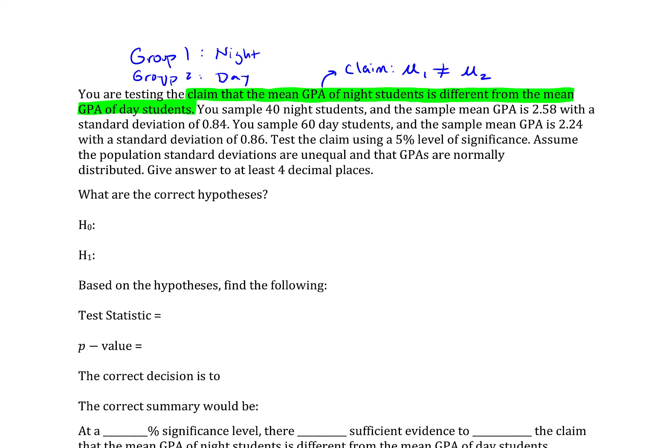So of the night students there are 40 night students. The sample mean is 2.58, the standard deviation of 0.84. And then there's a sample of 60 day students. Sample mean is 2.24 with a standard deviation of 0.86. We are going to be using a five percent level of significance. And the next bit of information, assuming the population standard deviations are unequal, that tells us if we need to pool our variances later on in the process or not. And I'll have stated that the GPAs are normally distributed. And what that would mean is we can be assured that we're working with normally distributed sets of data no matter what our sample sizes are. But regardless, these sample sizes are bigger than 30. We would have been safe either way.